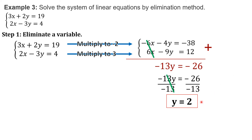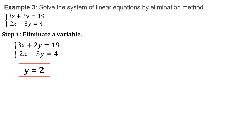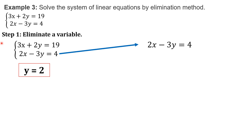Since we already have the value of one of the two variables, we may proceed to the second step — solve for the variable x. Again, you may use any of these two equations. For this example, I will use the second equation: 2x minus 3y equals 4. Please remember that you will get the same answer even if you substitute y equals 2 into the first equation or the second equation.